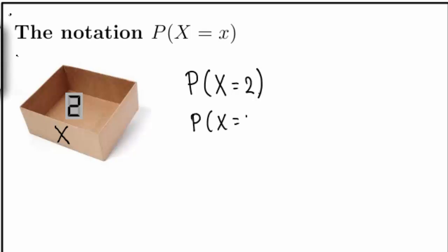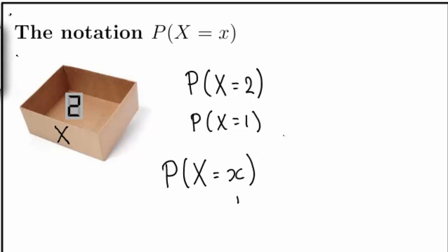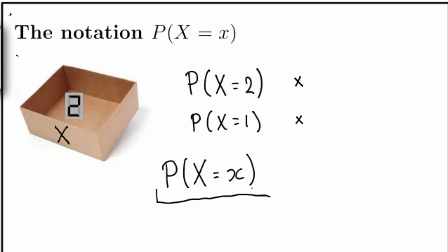Similarly, P(X=1) is the probability that you will see the number 1 when you look inside the box. So in general, P, capital X, equal to small x, where small x is any real number, represents the probability that you will see the value small x when you look inside the box. There is no reason for this to equal 1. It might very well be that the probability of seeing the number 2 is larger than the probability of seeing the number 1. This means that this probability depends on the value of small x — it's always a number between 0 and 1, but different values of small x will lead to different probabilities.